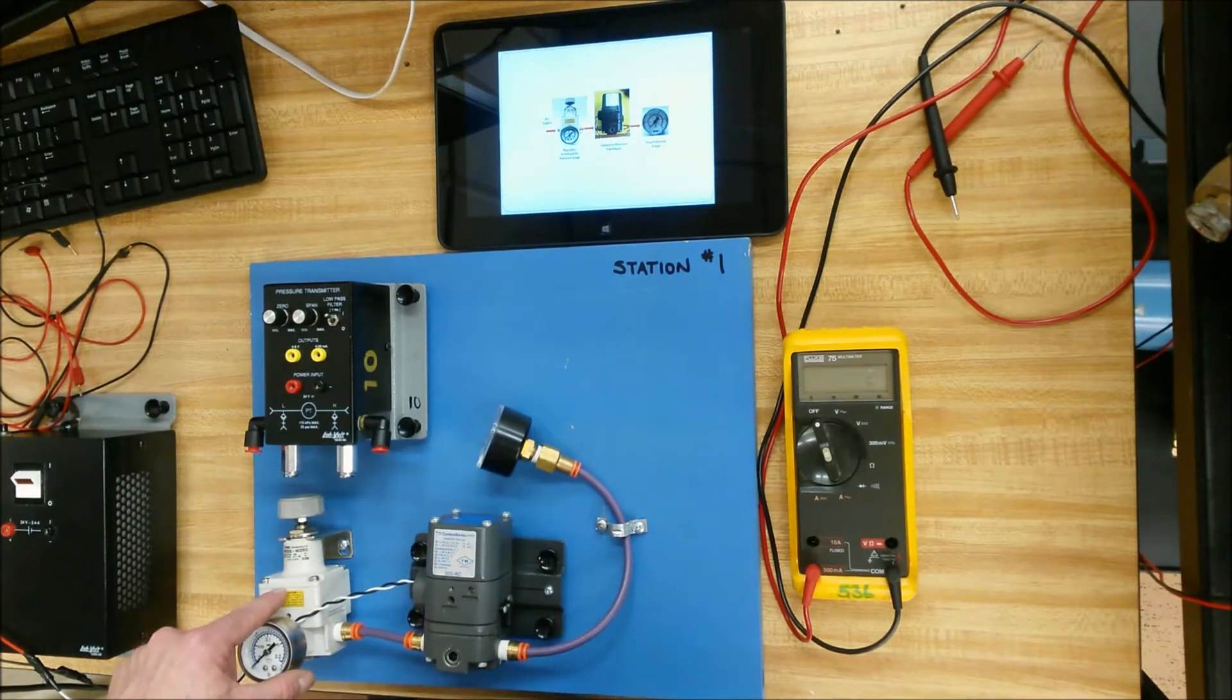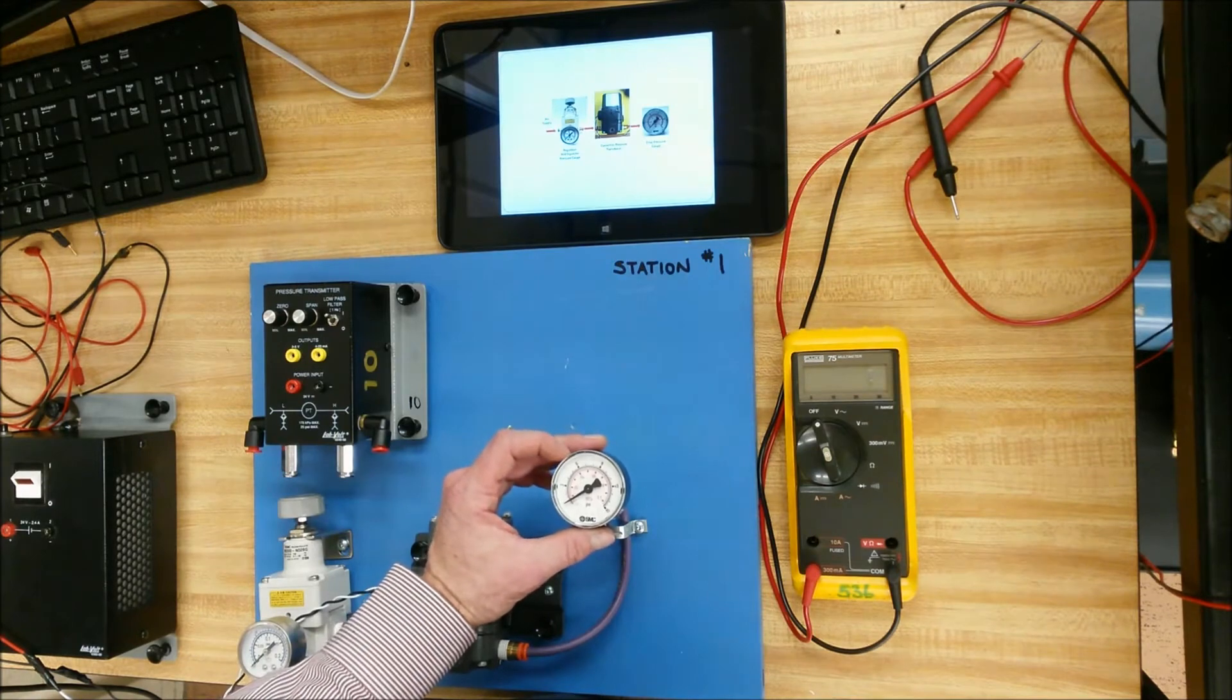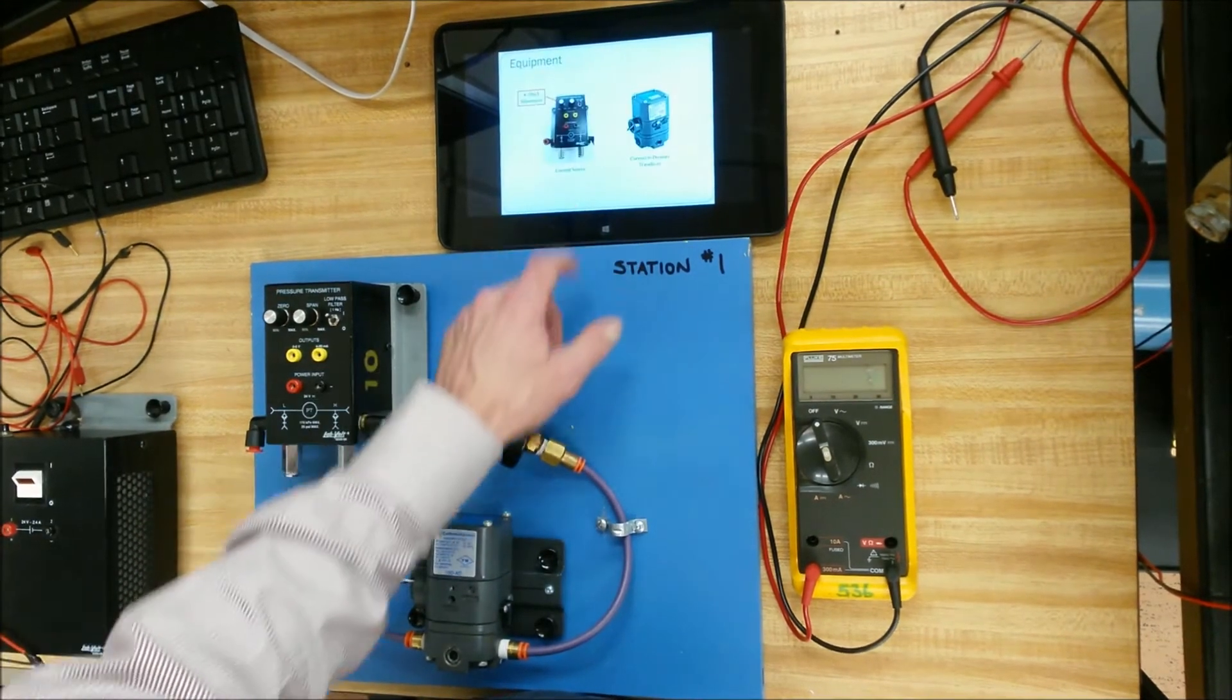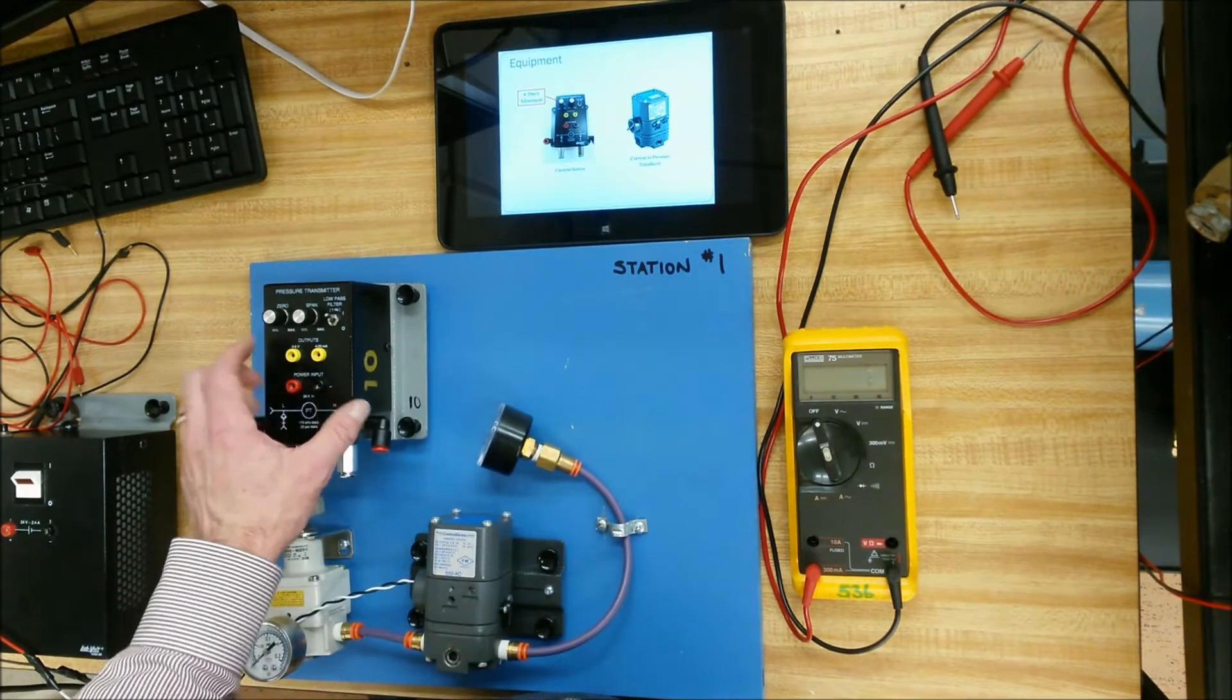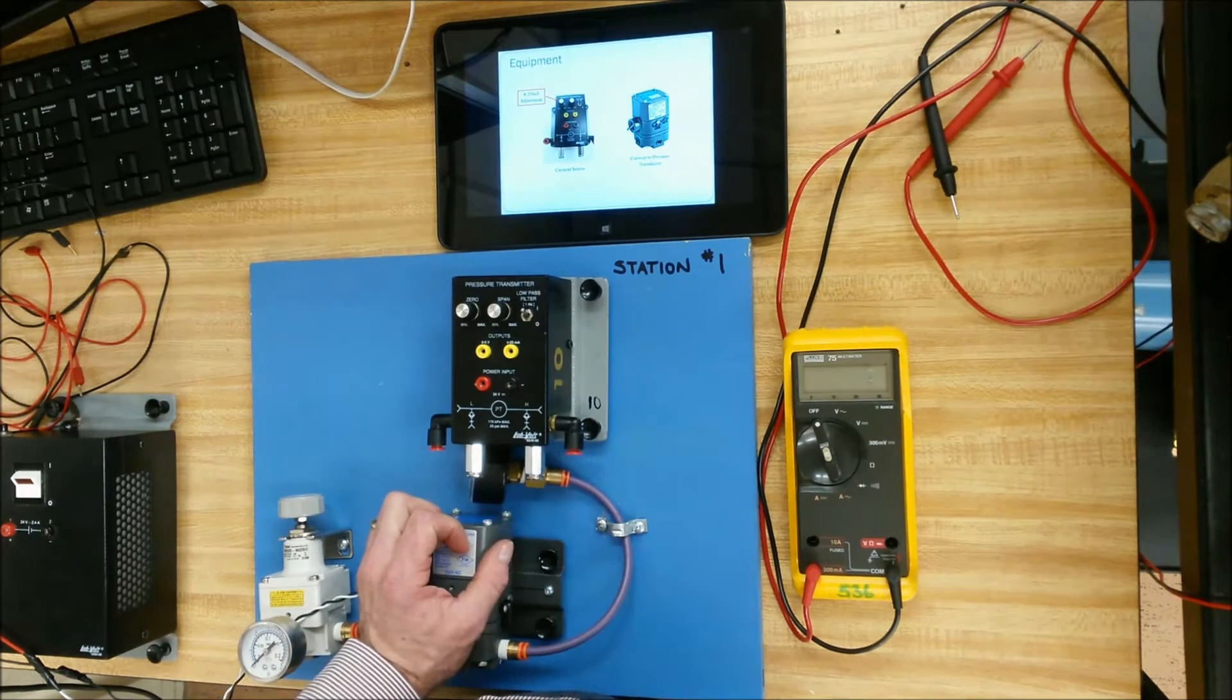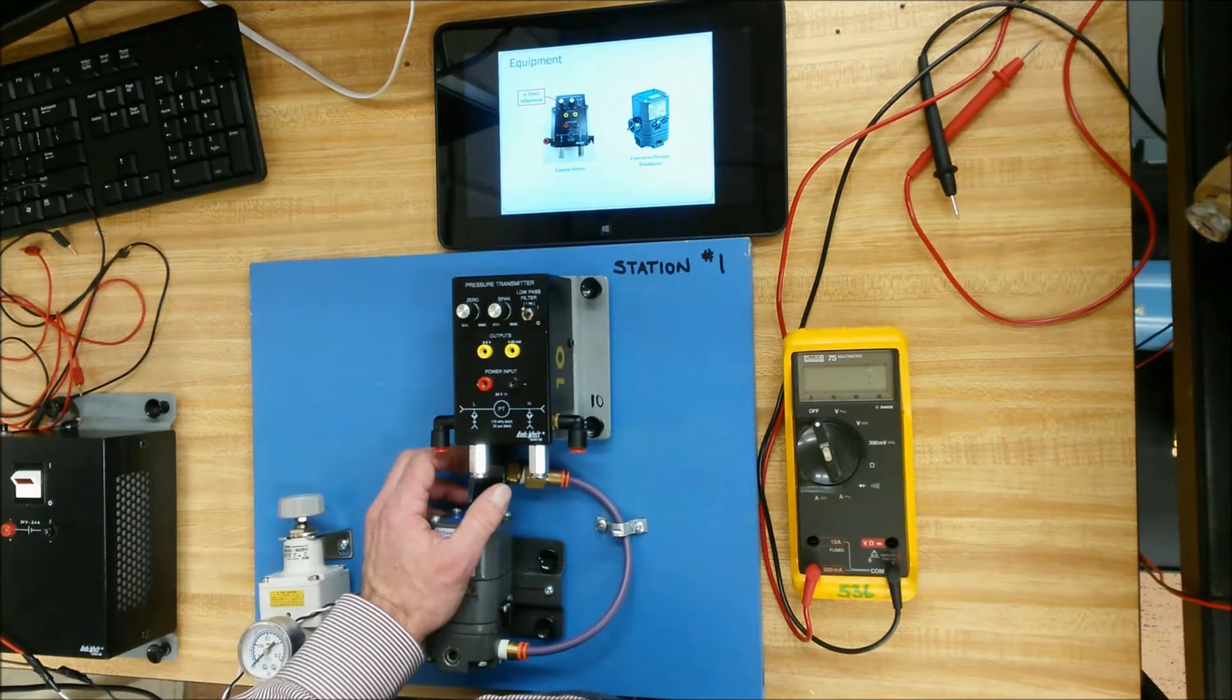So we have the regulator here. This guy is the current to pressure transducer, and this guy is what we're going to look at for our final pressure. This right here, in other labs, we're going to use this as a DP cell, a differential pressure cell. Today, all we're going to do is use this as a 4 to 20 milliamp source.